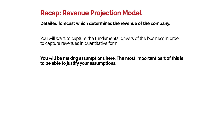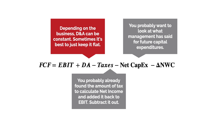Let's recap our formula to get to free cash flow. Free cash flow is EBIT plus depreciation and amortization minus taxes minus net capex minus change in net working capital. Depending on the business, depreciation and amortization can be constant — sometimes it's best to keep it flat. We already find taxes when we calculate net income, so we just need to subtract it out. For net capex, we want to look at what management has stated for future capital expenditures. So let's jump back to discounting.